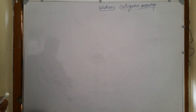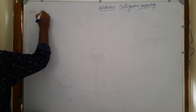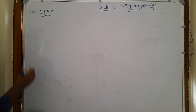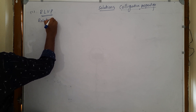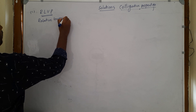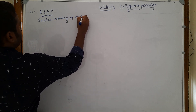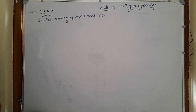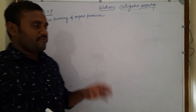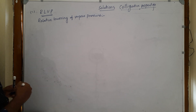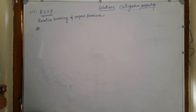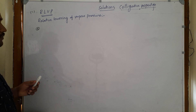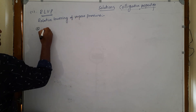The first colligative property is RLVP — relative lowering of vapor pressure. To understand RLVP, we first need to know about vapor pressure. In previous classes, I explained vapor pressure. Let us revise it briefly. If you want full details, you can watch that video.